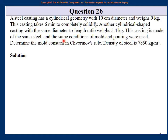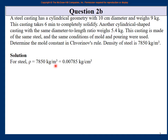We need to find the constant C in Chvorinov's rule. The density of 7850 kg/m³ is converted to kg/cm³ by dividing by 100 cubed, since 1 m = 100 cm. Alternatively, you can keep everything in meters.